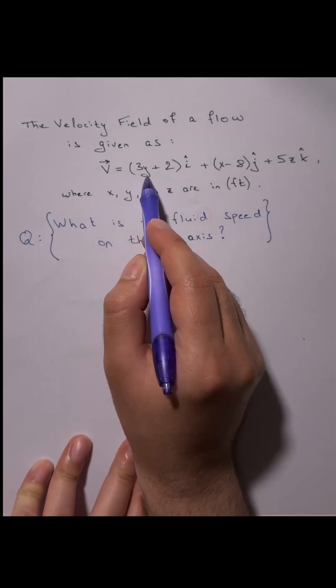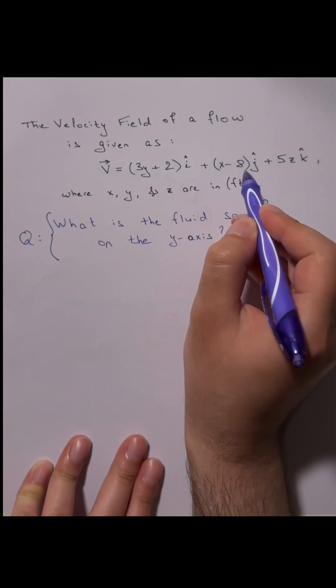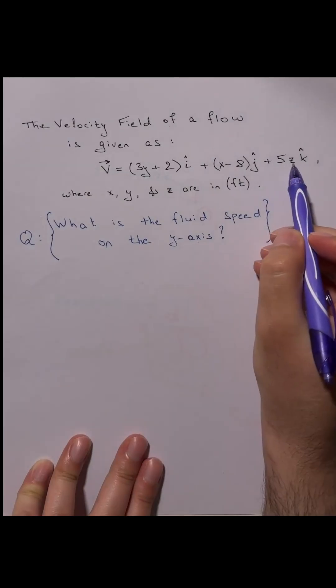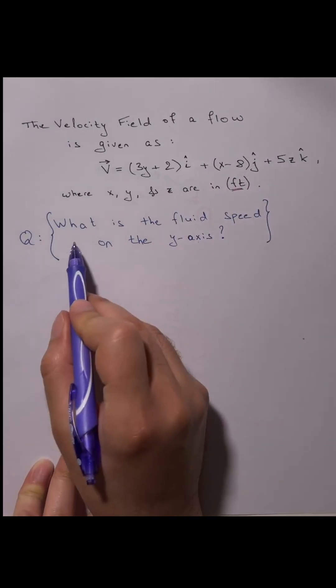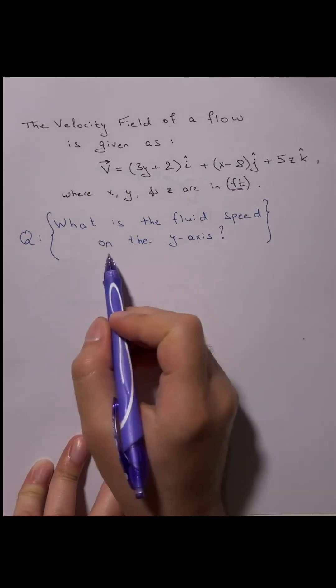A velocity field is given as 3y plus 2i plus x minus 8j plus 5zk, where x, y, and z are in feet, and you're required to find the fluid speed on the y-axis.